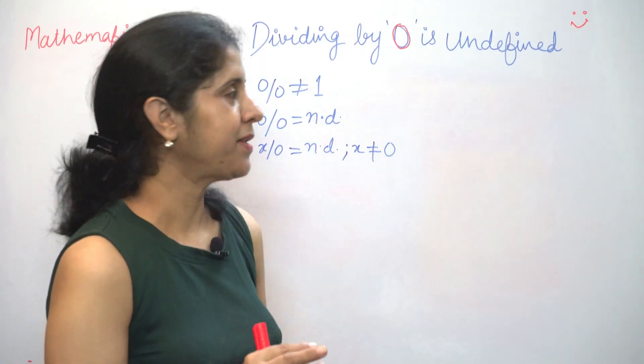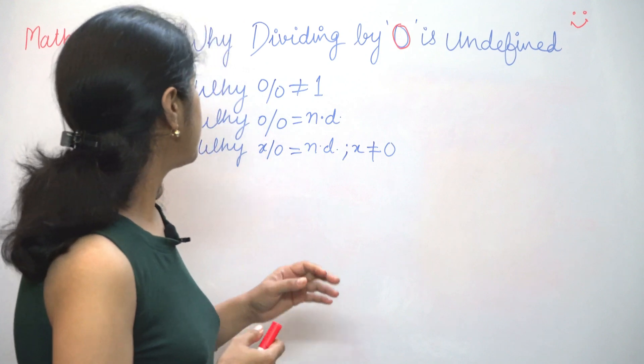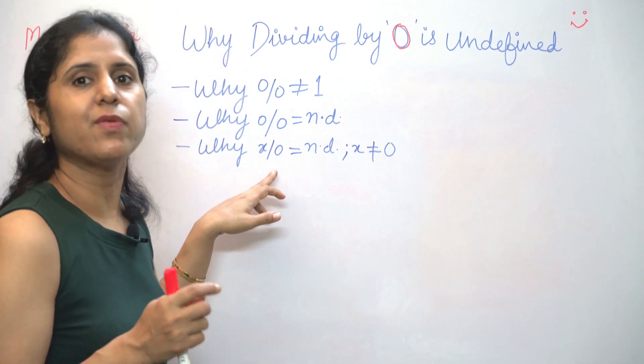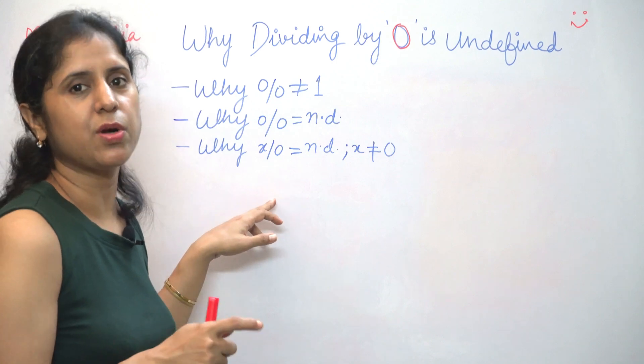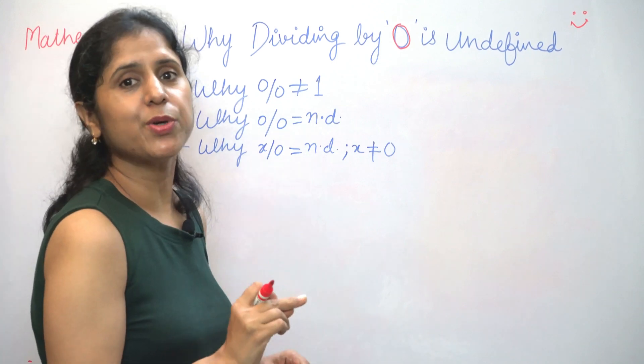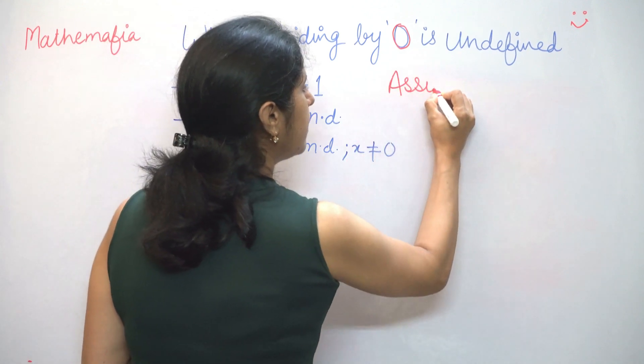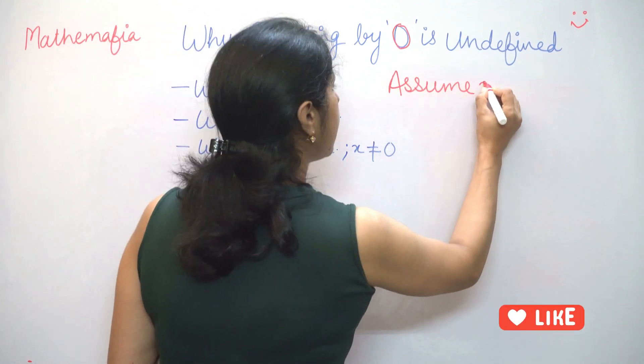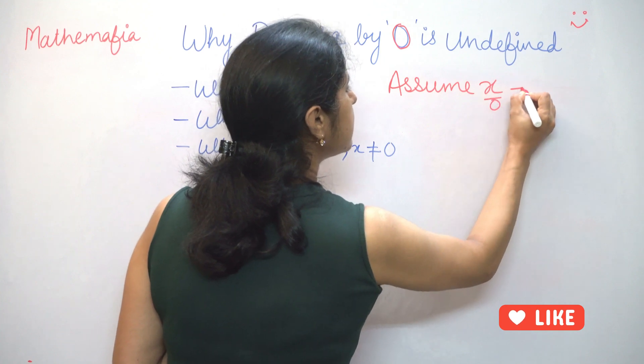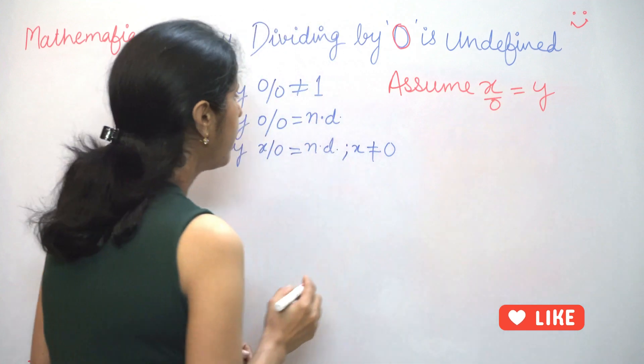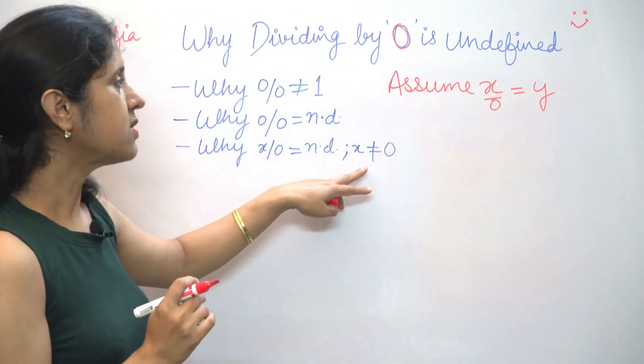Now we will prove the third and the final part of this question which is when x is not equal to 0. Then also, if we divide it by 0, it is going to give us not defined. So this also we are going to prove with contradiction. So we will assume that x upon 0 is a defined number which is say y, and we know that x is not equal to 0.